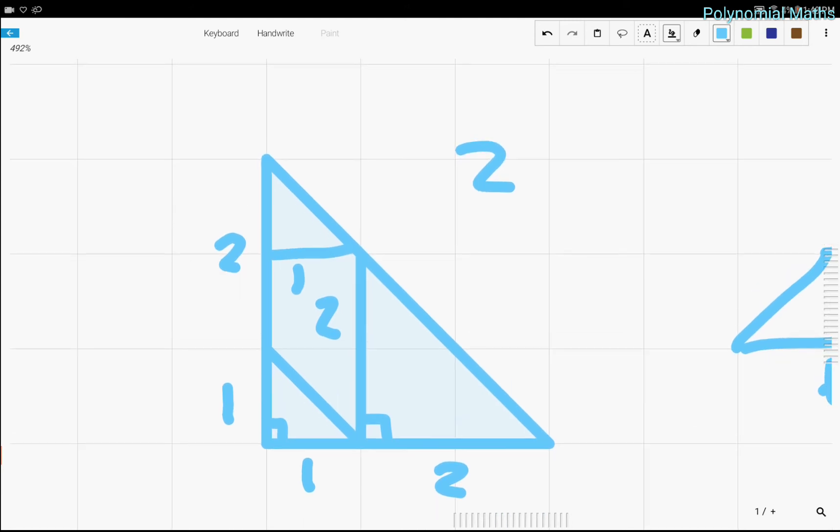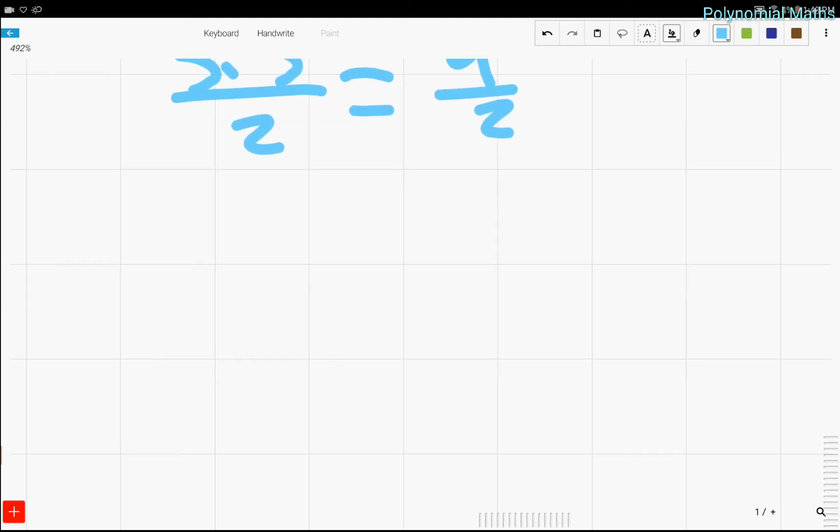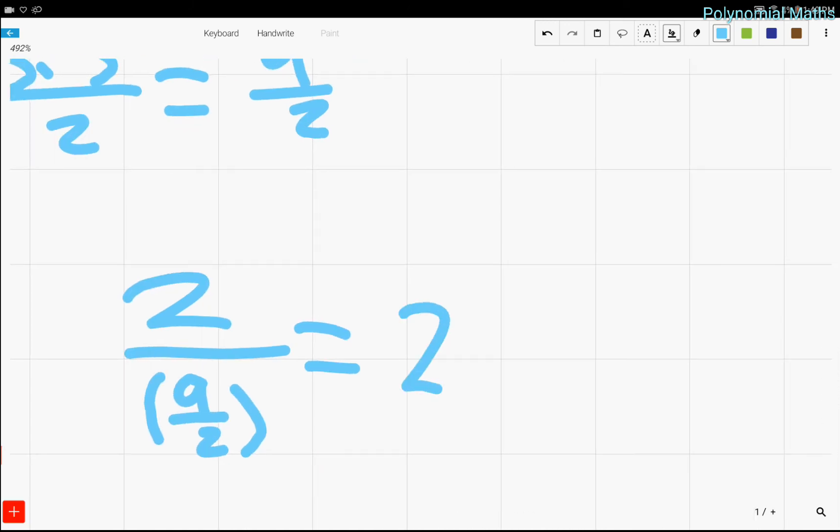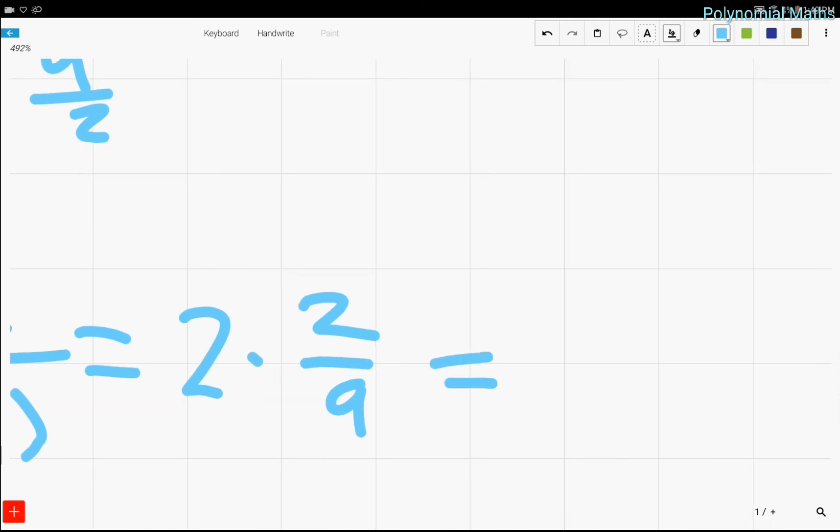And now we just find the ratio of 2 to 9 over 2. So 2 over 9 over 2 is equal to 2 times 2 ninths, which is equal to 4 over 9. And that is the ratio.